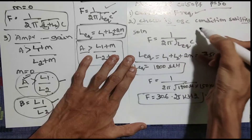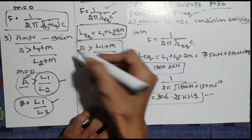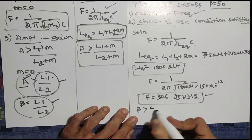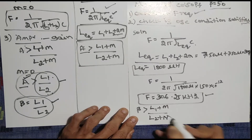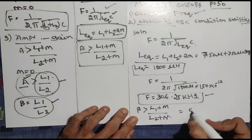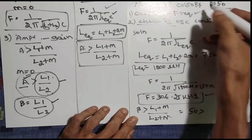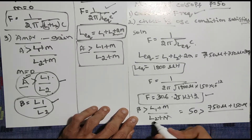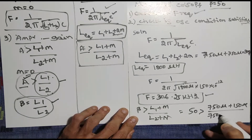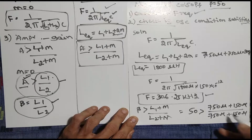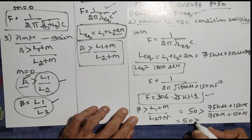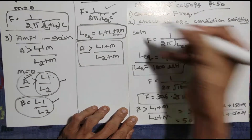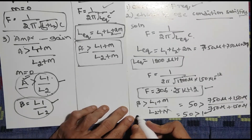Now checking the oscillation condition: beta must be greater than (L1 plus M) divided by (L2 plus M). Beta is 50, L1 plus M is 750 micro plus 150 micro, and L2 plus M is also 750 micro plus 150 micro, since L1 equals L2. Both numerator and denominator are the same, so the ratio equals 1. Therefore 50 is greater than 1, and the oscillation condition is satisfied.